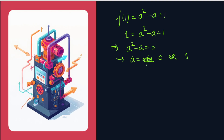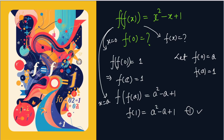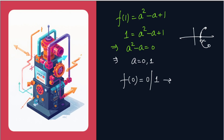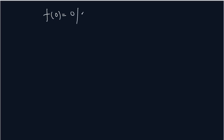So A = 0 or 1. Now A is F(0), so F(0) is either 0 or 1. But this is a function — for any input you can't have two values. So F(0) must take only one value: either 0 or 1.